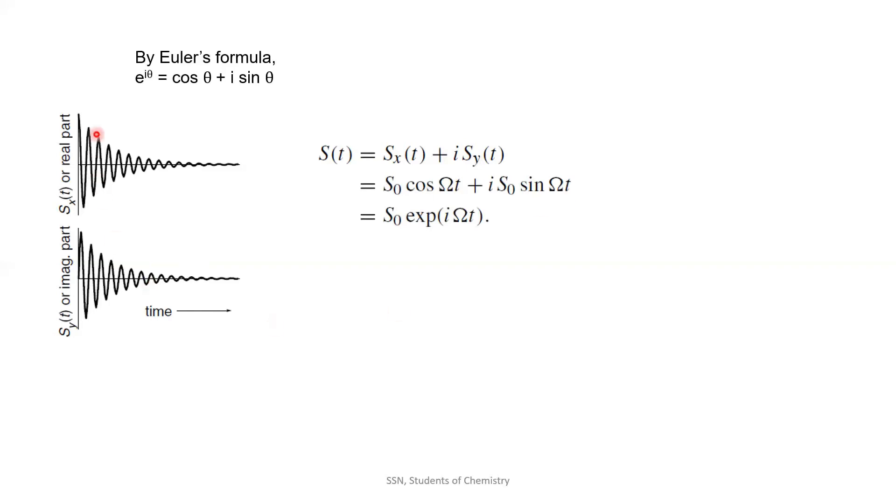Since we arrived at this equation with the help of decaying transverse magnetization, we have to account for the T2 contributions too. Hence, the term exponential of minus T by T2.